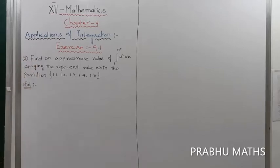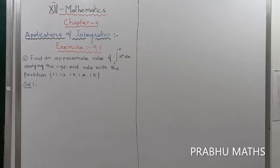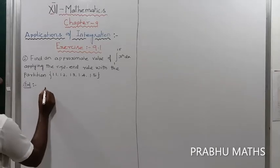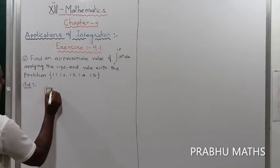Find the approximate value of integral 1 to 1.5 x square dx. Apply the right end rule with the partition 1.1, 1.2, 1.3, 1.4 and 1.5.